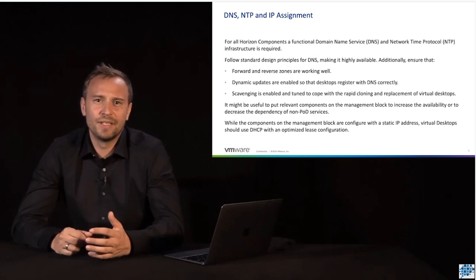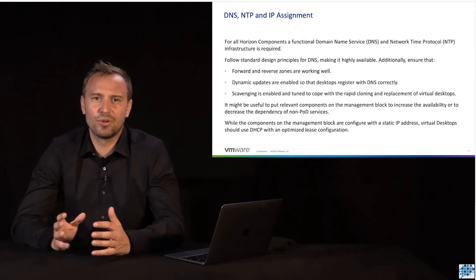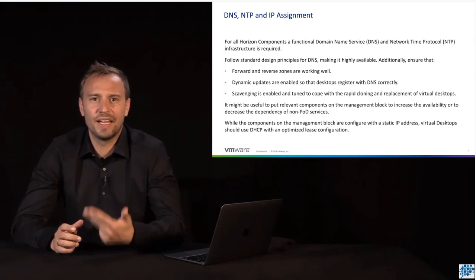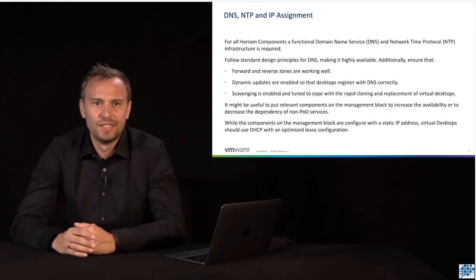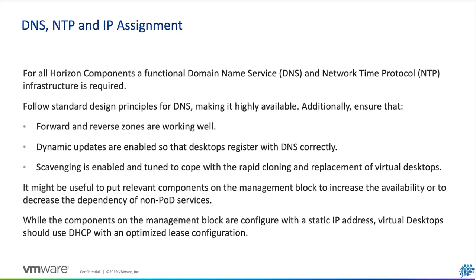When building a Horizon and vSphere infrastructure, we also depend on core services like DNS, NTP, and the mechanism for assigning IP addresses. For all Horizon components, we need a DNS entry, and both forward and reverse lookups must work properly so that we can translate an FQDN and domain into an IP address and vice versa. We should make sure that dynamic updates are enabled so that newly deployed virtual desktops have a proper DNS name from the beginning, and that scavenging is enabled, especially if we use instant clones or linked clones in our environment.